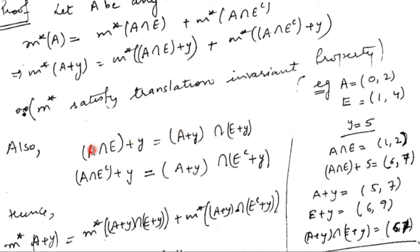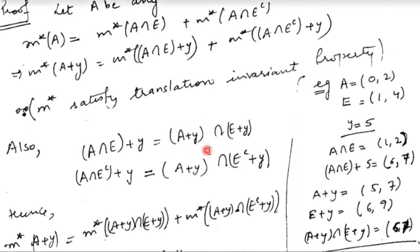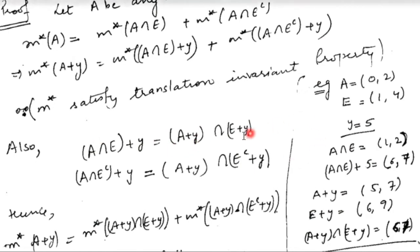One can see that (A intersection E) plus y is the same as (A plus y) intersection (E plus y). You can verify this by considering any element from the left-hand side and showing it is a member of the right-hand side, and similarly any element from the right-hand side is an element of the left-hand side.